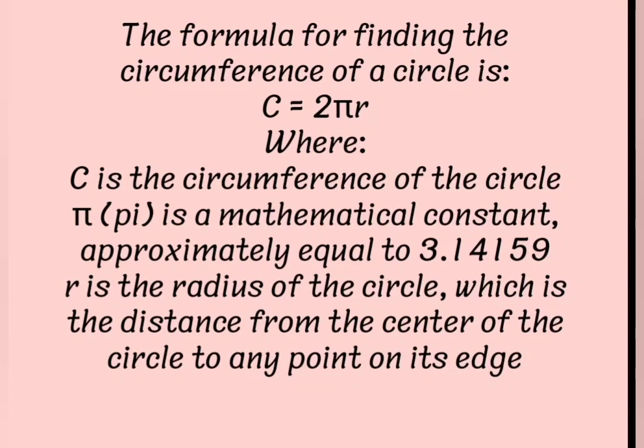The formula for finding the circumference of a circle is C equals 2 pi r.